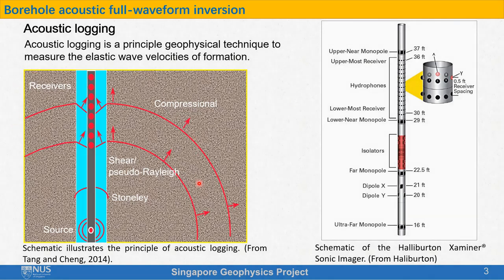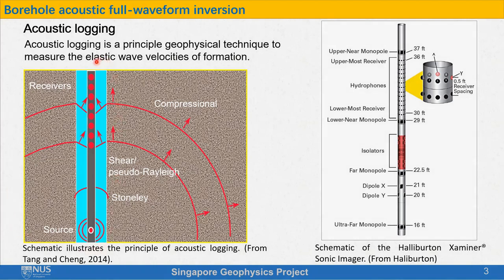This figure illustrates the principle of acoustic logging. The acoustic logging tool consists of source and receivers. The source is a transducer that generates acoustic waves, and the receivers are transducers that receive acoustic waves. During the work, the logging tool will be put at the bottom of the well, and then slowly pulled up to the surface.